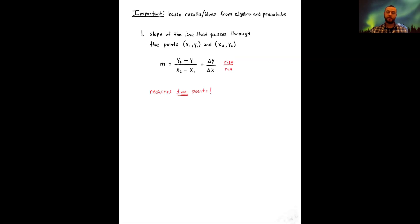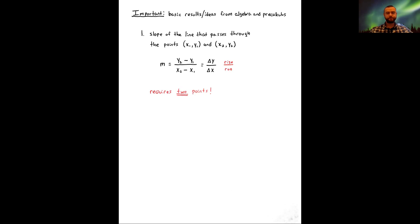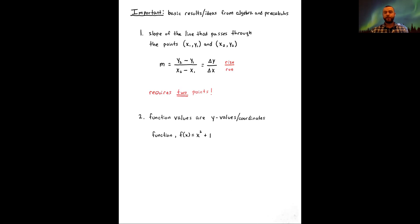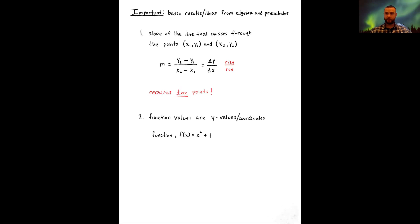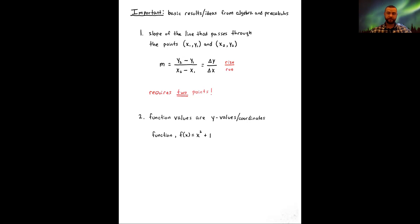There is a problem we'll get into: the slope formula requires two points — (x₁, y₁) and (x₂, y₂). The second idea comes from your pre-calculus course: function values or output values represent y values or y coordinates. For a simple function f(x) — where the parentheses are function notation, not f times x — let's define f(x) = x² + 1 as a concrete example.